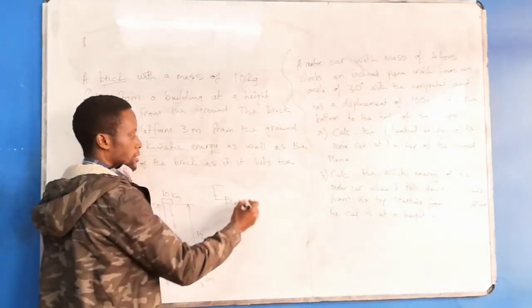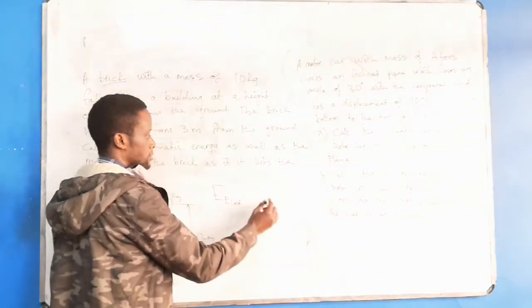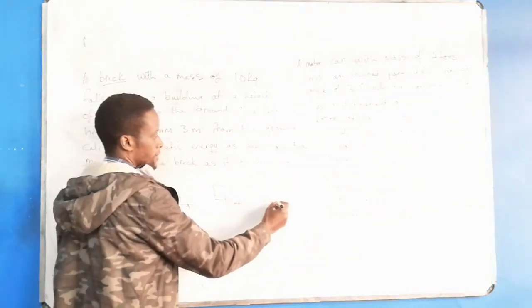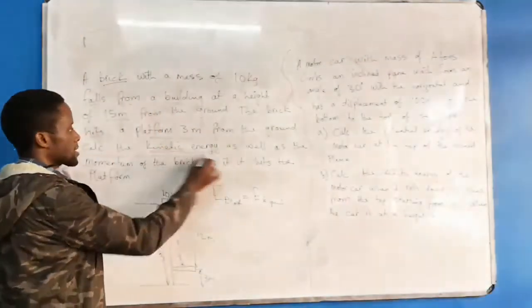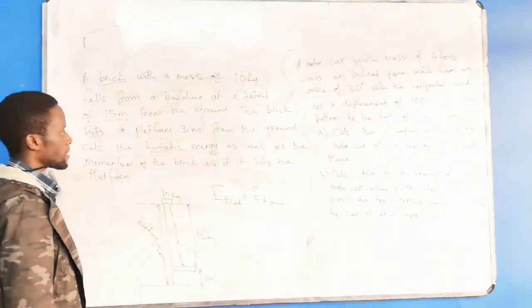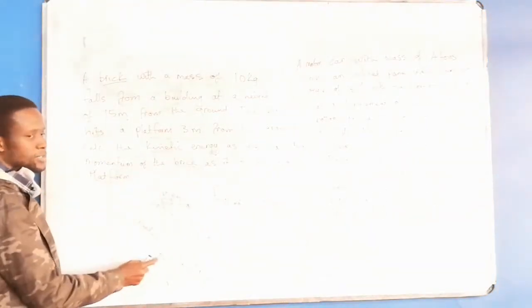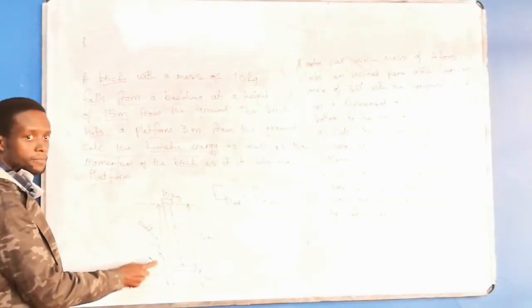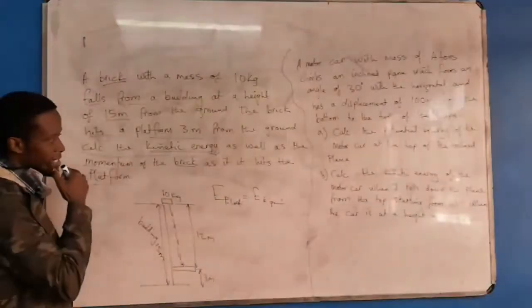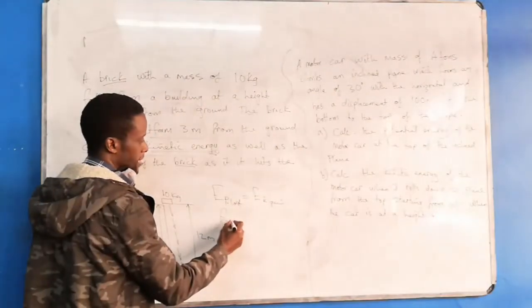Which means what is the distance moved? 12. That's what you're using. Your potential energy that is lost is equal to your kinetic energy. That is gained. And that is what they are asking us when the brick hits the platform. So that 15 was just to set you off. What you're dealing with is 12 meters.